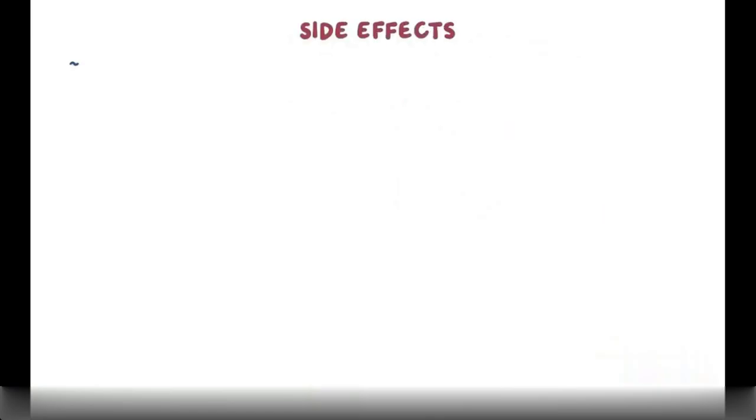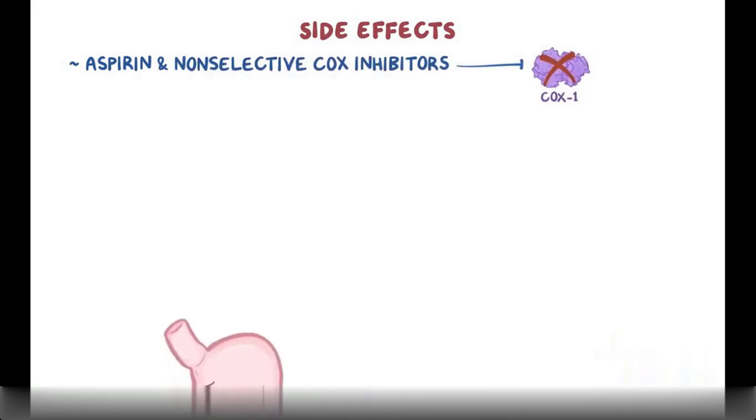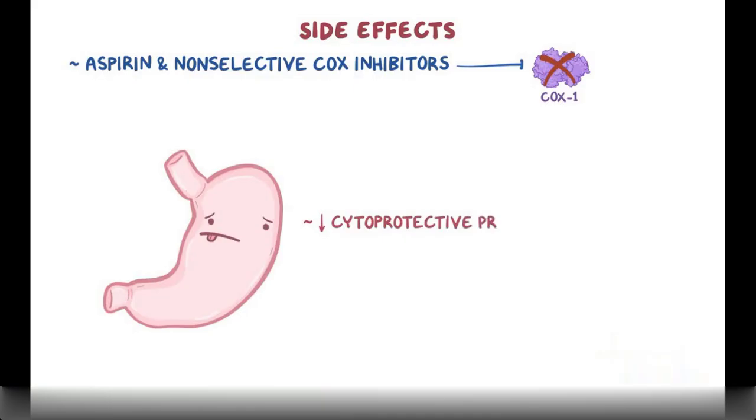For side effects, both aspirin and the non-selective COX inhibitors can cause problems by blocking COX-1 in many parts of the body. Inhibition of COX-1 in the stomach decreases the concentration of cytoprotective prostaglandins, which can lead to gastritis, gastric ulcers, or even bleeding.